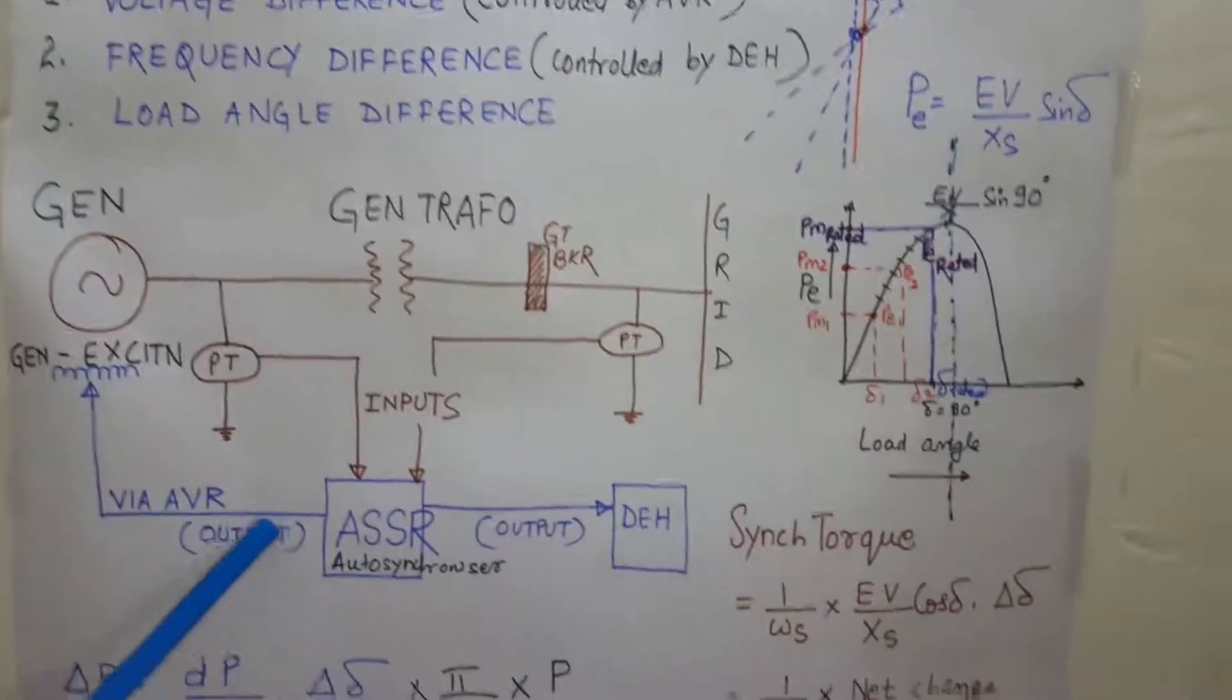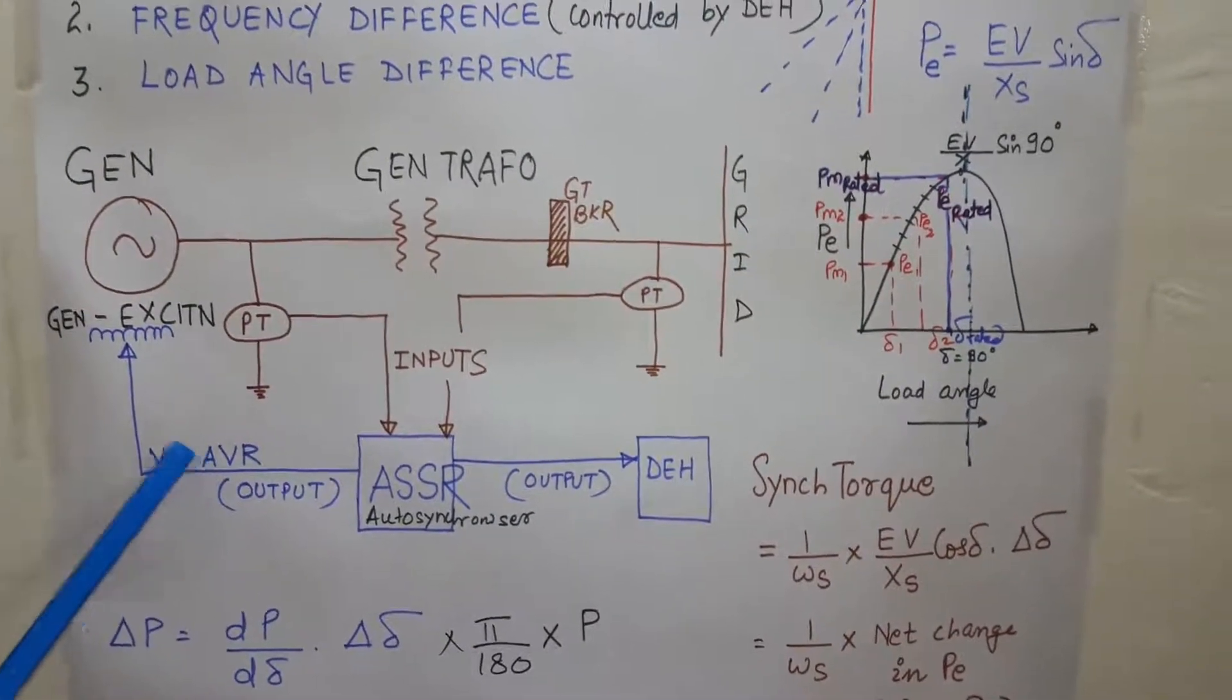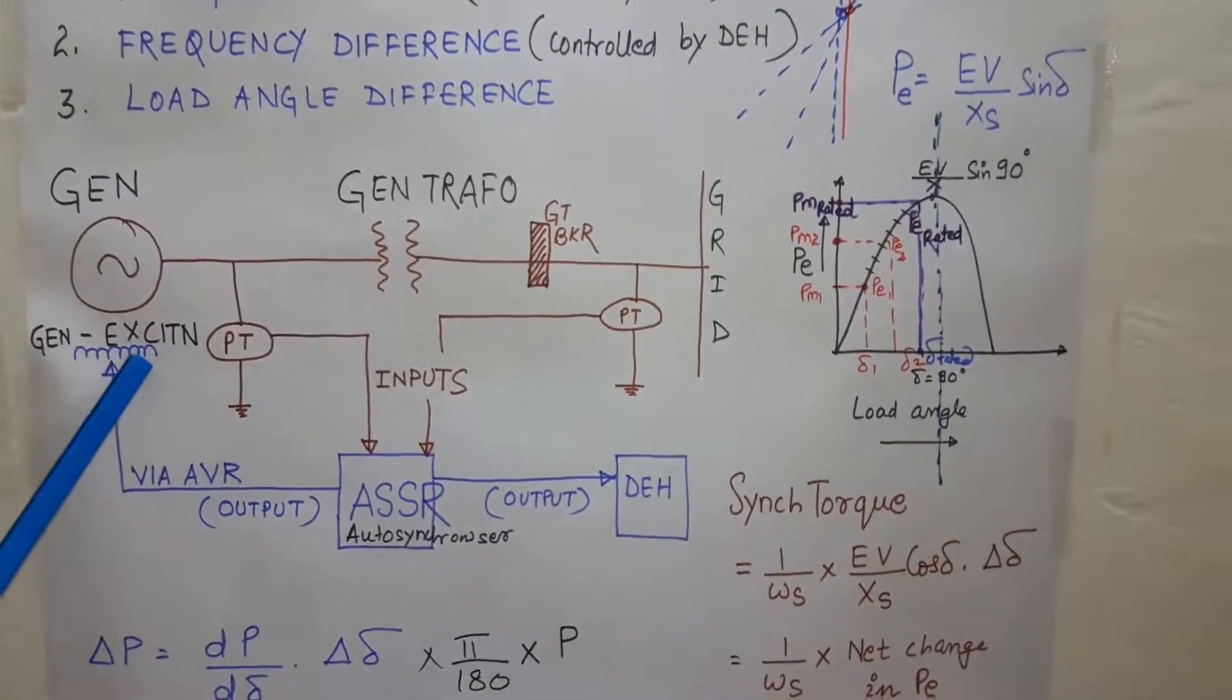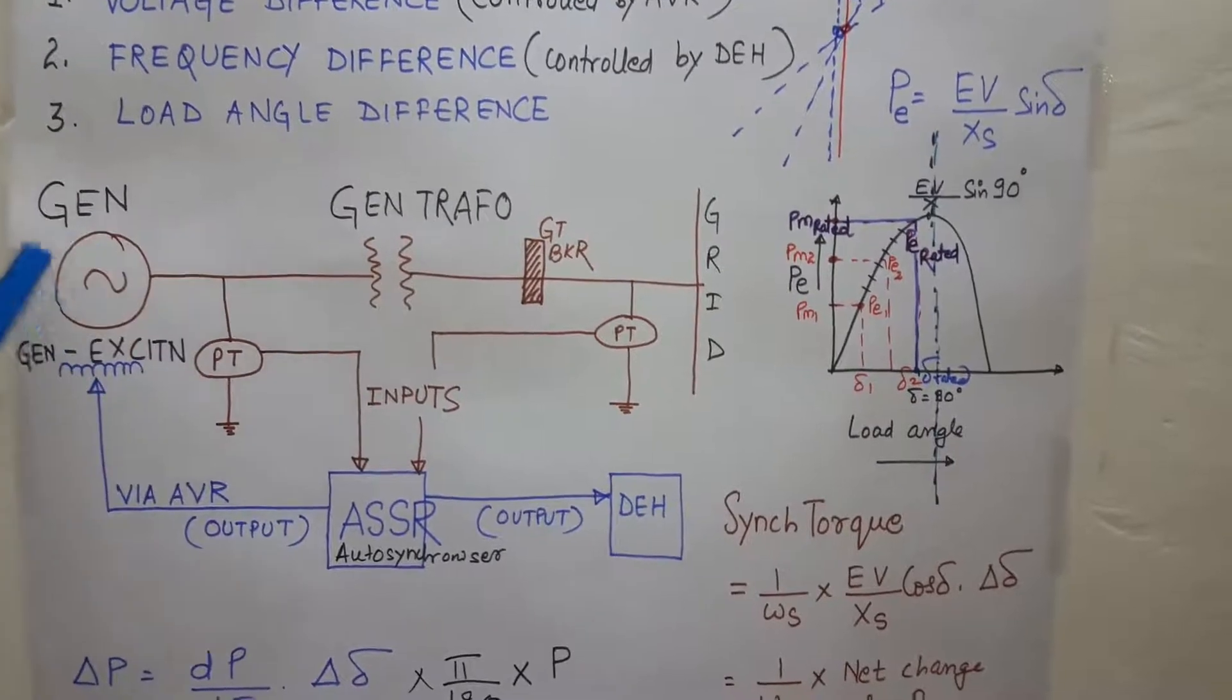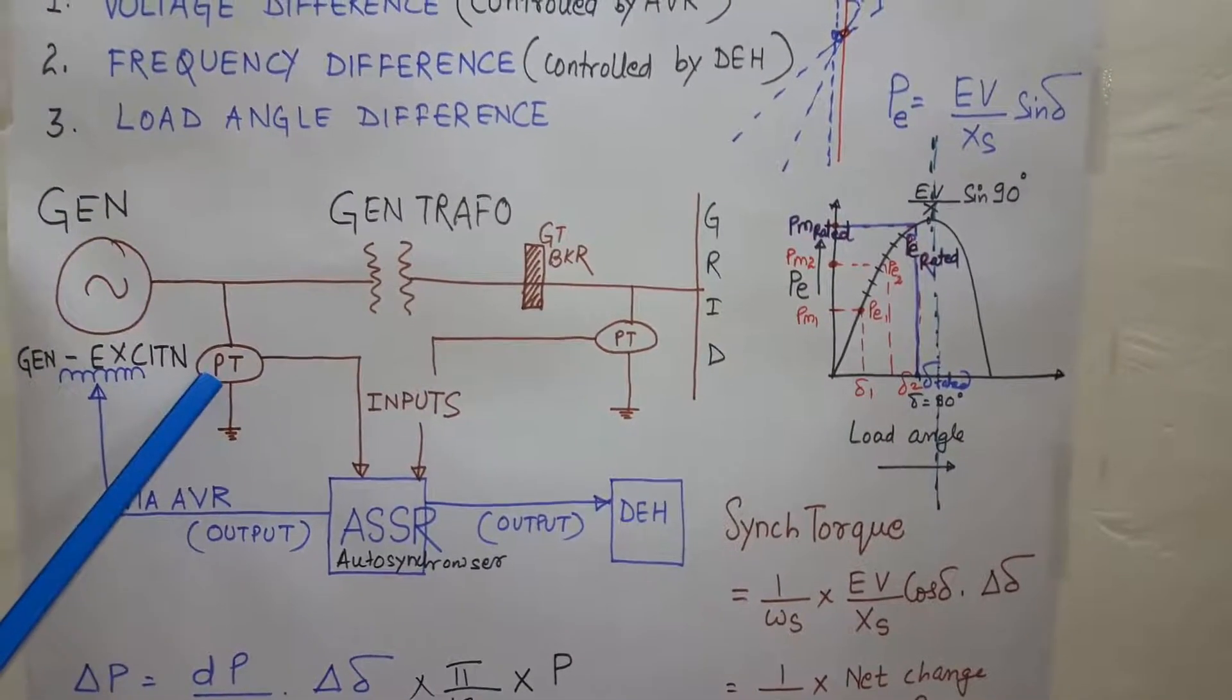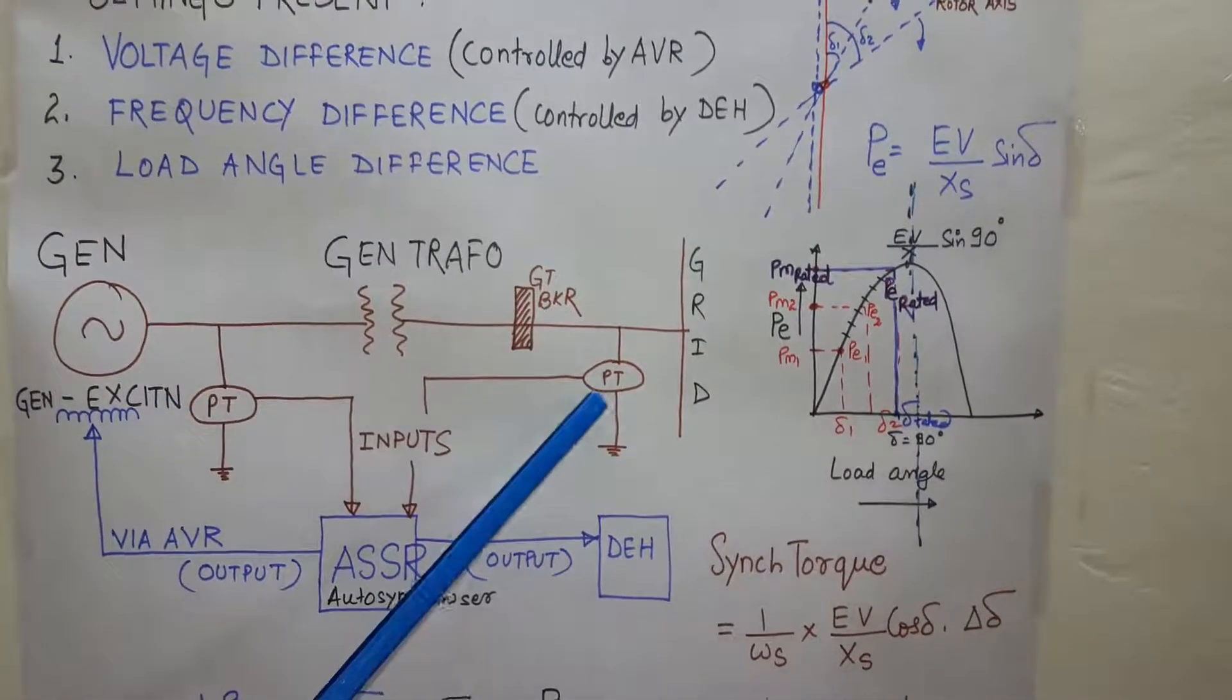When comparing, if the voltage is outside the tolerance limit of this setting, immediately it will send an output signal to the automatic voltage regulator to control the excitation current of the generator field winding. By controlling the excitation current, the generator voltage will be controlled and may come equal with the grid voltage.